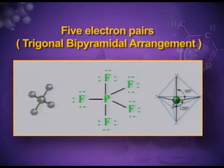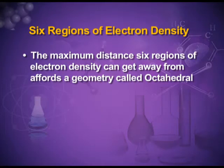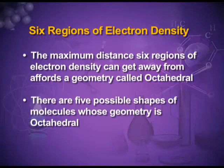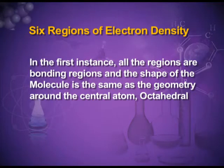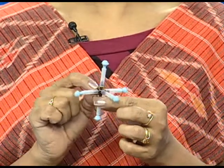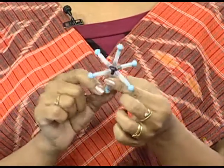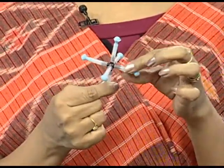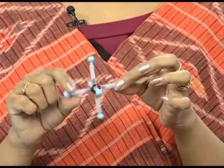Six regions of electron density: the maximum distance six regions can get from each other affords a geometry called octahedral. There are five possible shapes of molecules whose geometry is octahedral. In the first instance, all six regions are bonding regions and the shape is octahedral — example is SF₆. The black atom is sulphur and the blue atoms are fluorine. All angles are 90 degrees in the regular octahedral molecule.